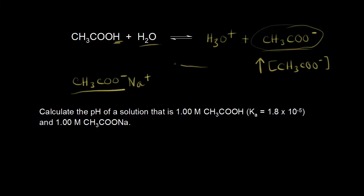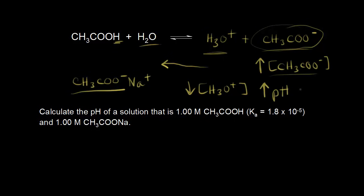So the equilibrium is going to shift to the left, and that means that some of this acetate anion is going to react with some of your hydronium ion when your equilibrium shifts to the left. This decreases the concentration of hydronium ion, and if you decrease the concentration of hydronium ion, you're going to increase the pH of your resulting solution. So the acetate anion is the common ion, and this is the common ion effect.